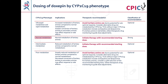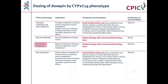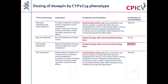Patients with a CYP2C19 normal metabolizer phenotype will have normal metabolism of tertiary amines and can begin doxepine therapy with the recommended starting dose — this is a strong recommendation. Patients with a CYP2C19 intermediate metabolizer phenotype will have reduced metabolism of tertiary amines and can also begin doxepine therapy with the recommended starting dose, which is an optional recommendation.